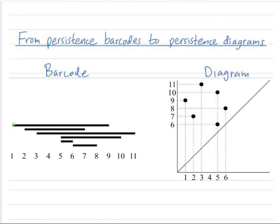And on the left here, this bar corresponds to a loop that was born at scale one and dies at scale nine, whereas this bar represents potentially a smaller loop that was born at scale five and dies at scale six.